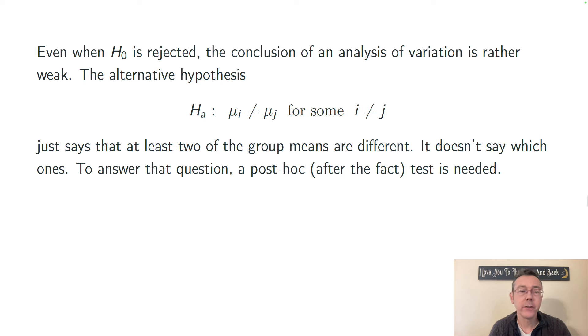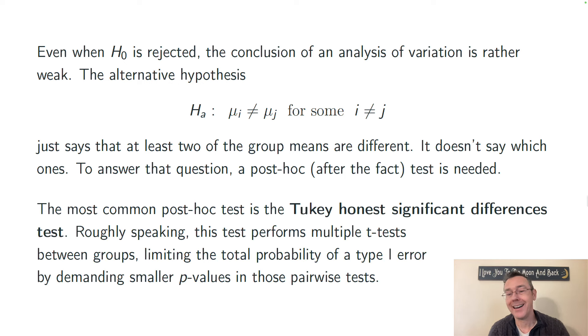To answer those kinds of questions, you need an after-the-fact or post-hoc test. The most common and simplest one is the Tukey Honest Significant Differences Test, which, roughly speaking, performs a lot of different pairwise t-tests. So, for every pair of categories, you get a paired t-test between those two. Because you have all of those repeated tests, the probability of a type 1 error ends up being pretty high and the Tukey Honest Significant Differences Test accounts for that by making the cutoff value for statistical significance much lower. At some point, I'll record a whole video on the Tukey Honest Significant Differences Test. When that happens, I'll make sure that there's a link up top for that.